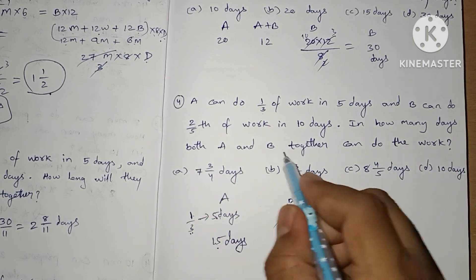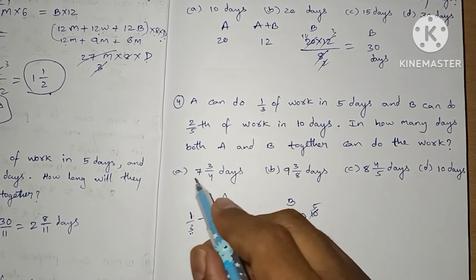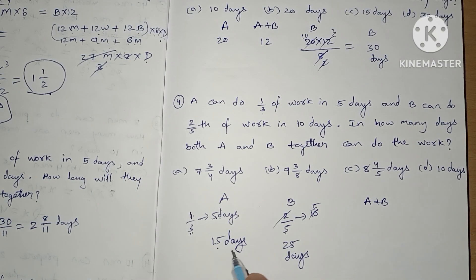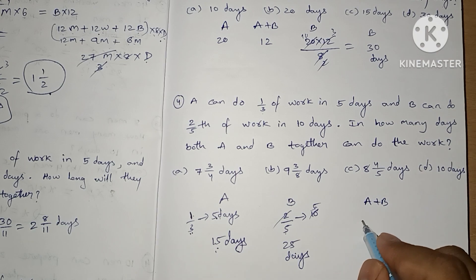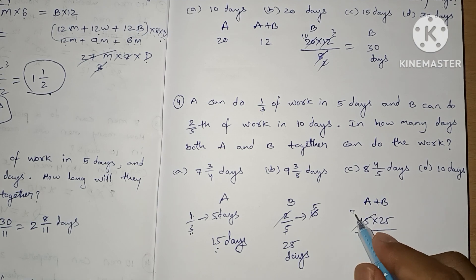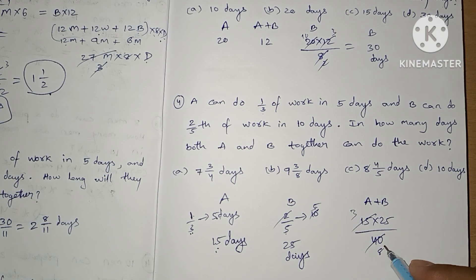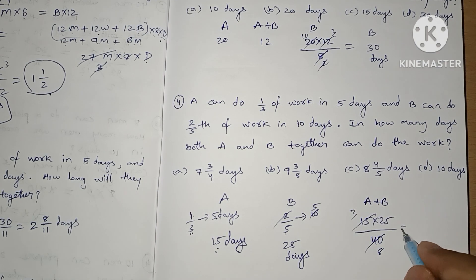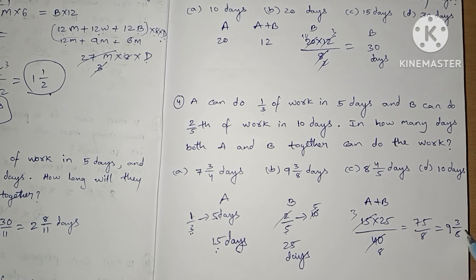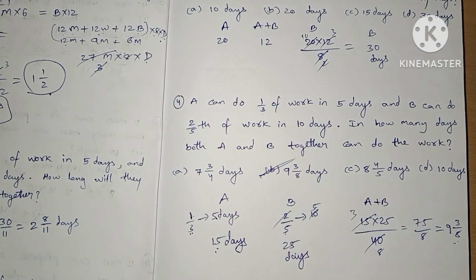In how many days can A and B together do the work? Formula: A × B / (A + B) = 15 × 25 / 40. Simplifying: 75/8 = 9 and 3/8 days. Option B is our answer.